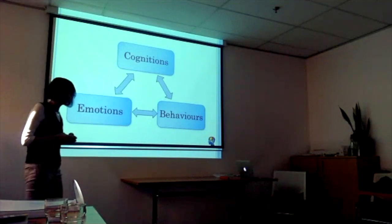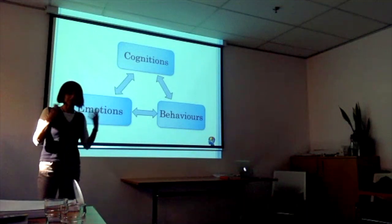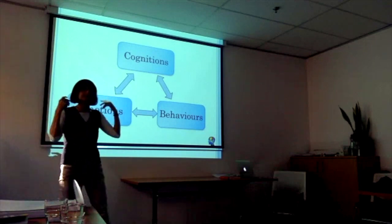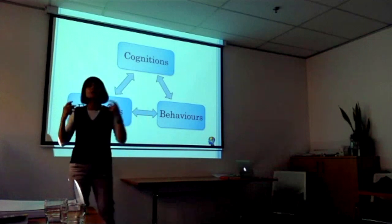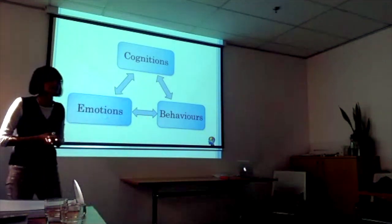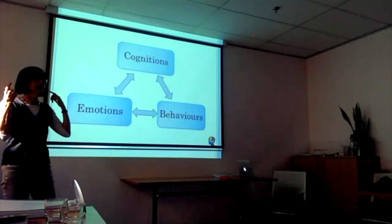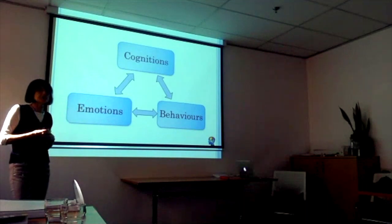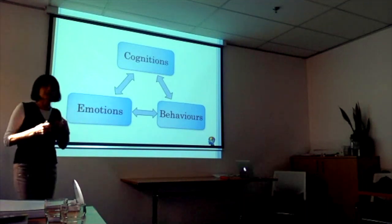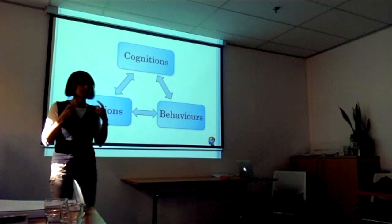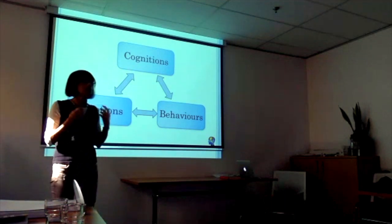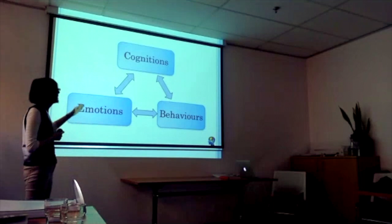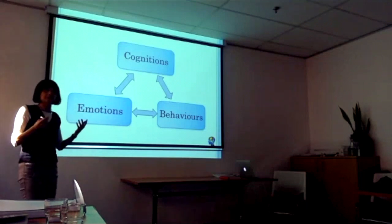In terms of understanding the basic model of cognitive behaviour therapy, there are three main components. One is cognitions — thoughts, beliefs, assumptions, and the often unconscious perceptions that we bring to situations. The way that we think affects the way that we feel, largely determining our emotional responses — whether we feel angry, anxious, frustrated, sad, resentful or depressed — largely influenced by cognitions and the meanings we attach to situations, which then affects our behaviour.